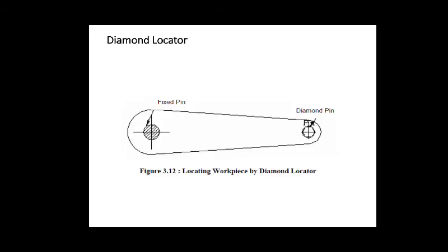Next is the diamond locator. A diamond-shaped pin should be used to constrain pivoting of the workpiece around the principal locator. The principal locator should be longer than the diamond pin so the workpiece cannot pivot around it before engaging with the diamond pin. If two fixed pins are provided, they will not accommodate variation in the center distance of holes. This problem is avoided by using a diamond pin, which can accommodate variation in the center distance.